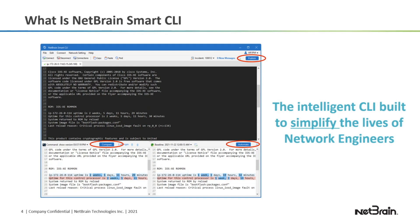So what is NetBrain Smart CLI? This here is a screenshot of the Smart CLI. As you can see, it looks like any other CLI. You have the area where you type in your commands and you see the command output. It looks very familiar — you have where you can make connections and things of that nature. However, you can see a couple of things that are different from your typical CLI. We have the publish functionality, which you can use to highlight interesting output and share it with your teammates during troubleshooting.